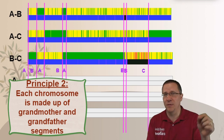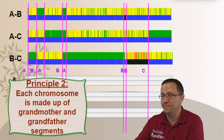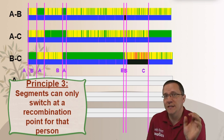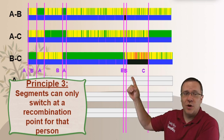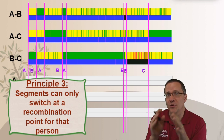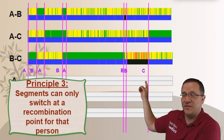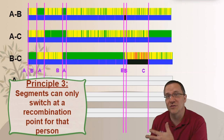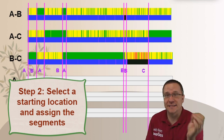We certainly don't know which segments belong to the grandparents on the maternal or paternal side. Those are principles we need to keep in mind as we go forward, because in the next video we're actually going to assign those segments to different people. Principle number three: segments can only switch between grandmother and grandfather at a recombination point for that person. We assigned people to each recombination point, so it can only go from grandmother to grandfather at one of those points. For instance, the C recombination point is all the way at the end, so C will have one big long segment going all the way to the beginning of the chromosome.